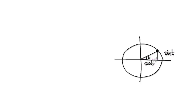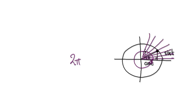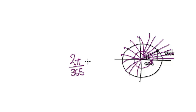The idea here is to get the whole angle, which is 2π, and then cut it up into 365 equal pieces. Each block here represents a small angle — one increment of time.